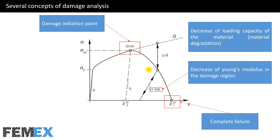In the damage region, a parameter is defined — the damage parameter. The damage parameter is equal to 0 at the damage initiation point and equal to 1 at the complete failure point. In the damage region, the Young's modulus of the material decreases, and as you can see, the loading capacity of the material decreases too.